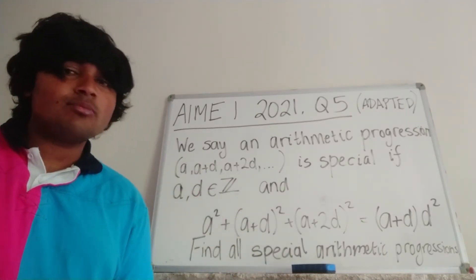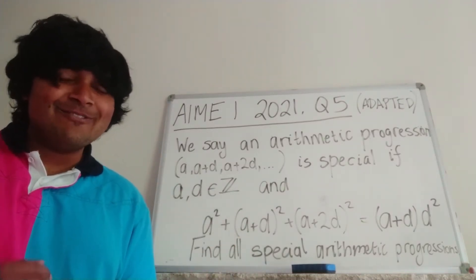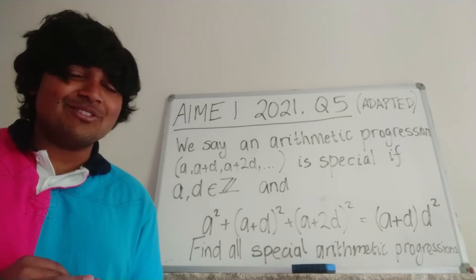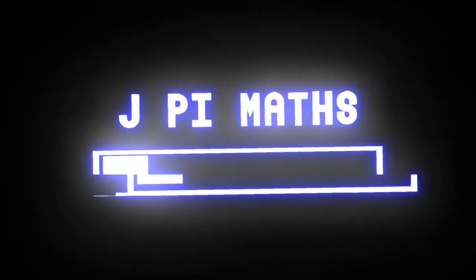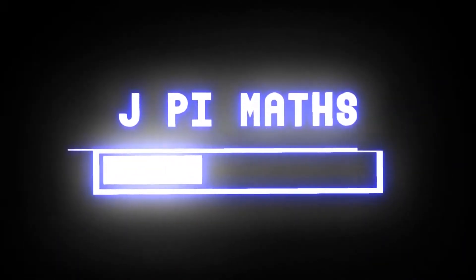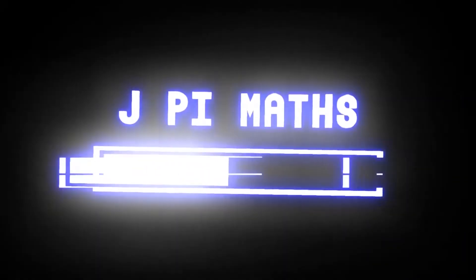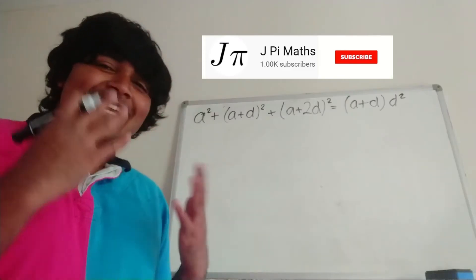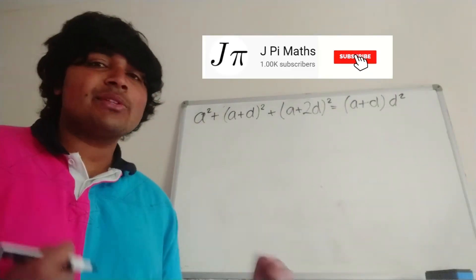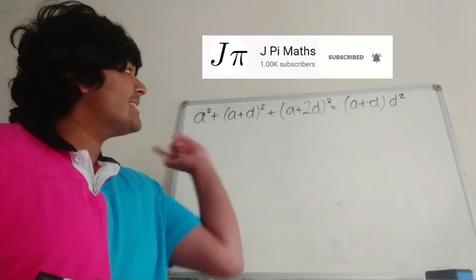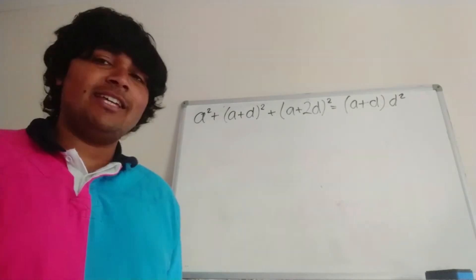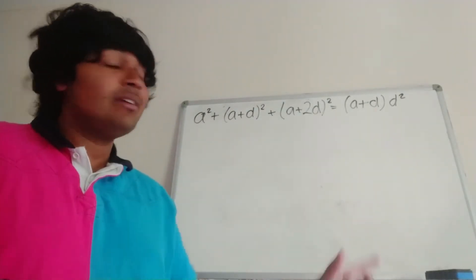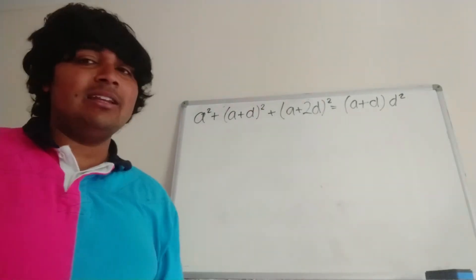If you want to have a go at this problem, pause the video now and give it a go for yourself. I'm going to jump straight into a solution. Essentially what we want to do is find all integers a and d that satisfy this equation. The first thing I'm going to do is a simple substitution to make this look a little cleaner.